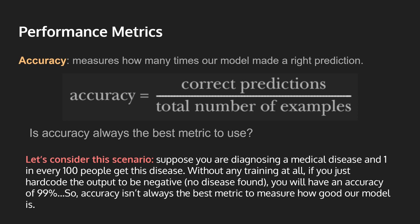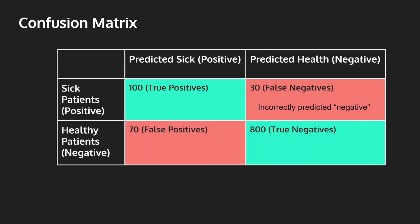So what do we use? First, let's look at something called a confusion matrix. Suppose we're building a classifier to predict whether a patient is healthy or not. The expected classifications are either positive — meaning the patient is sick — or negative — meaning the patient is healthy. And if we run our model 1000 times on 1000 patients and enter the model's predictions into our confusion matrix, this is what we get. Let's interpret this table together.